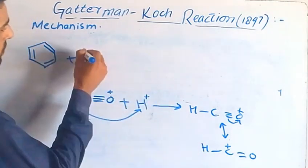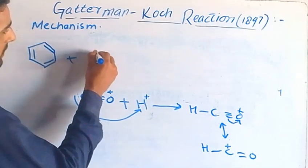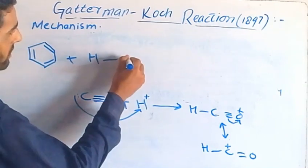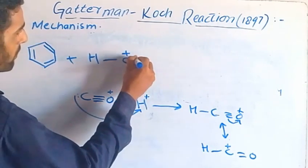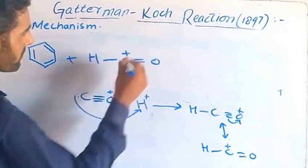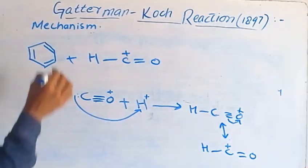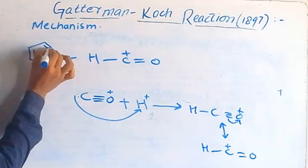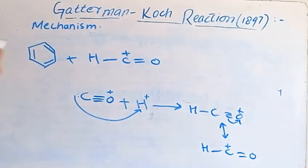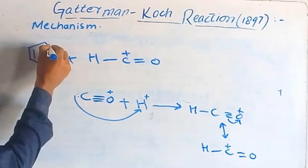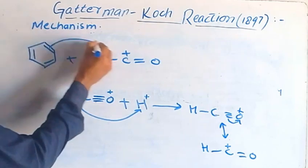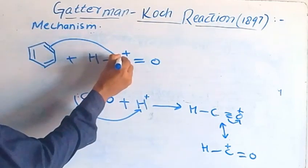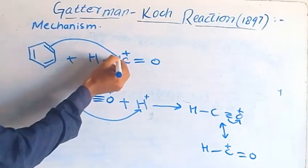This is the electrophile — the formyl cation — with a positive charge on carbon and a double bond to oxygen. This bond is not a simple bond. This is carbon with a positive charge — we have a carbocation.